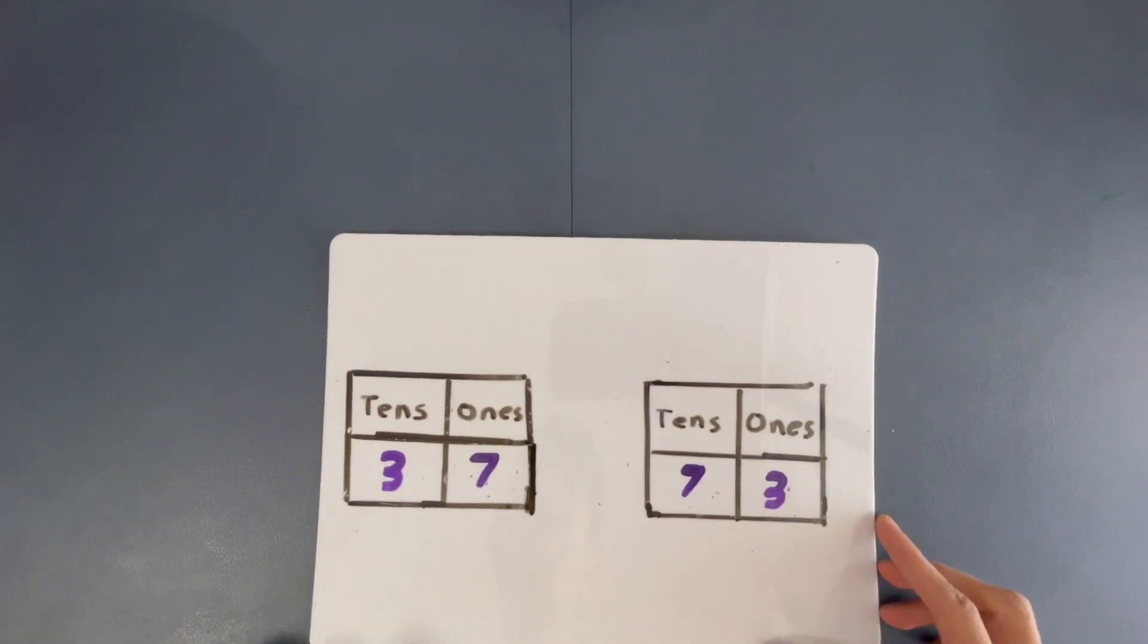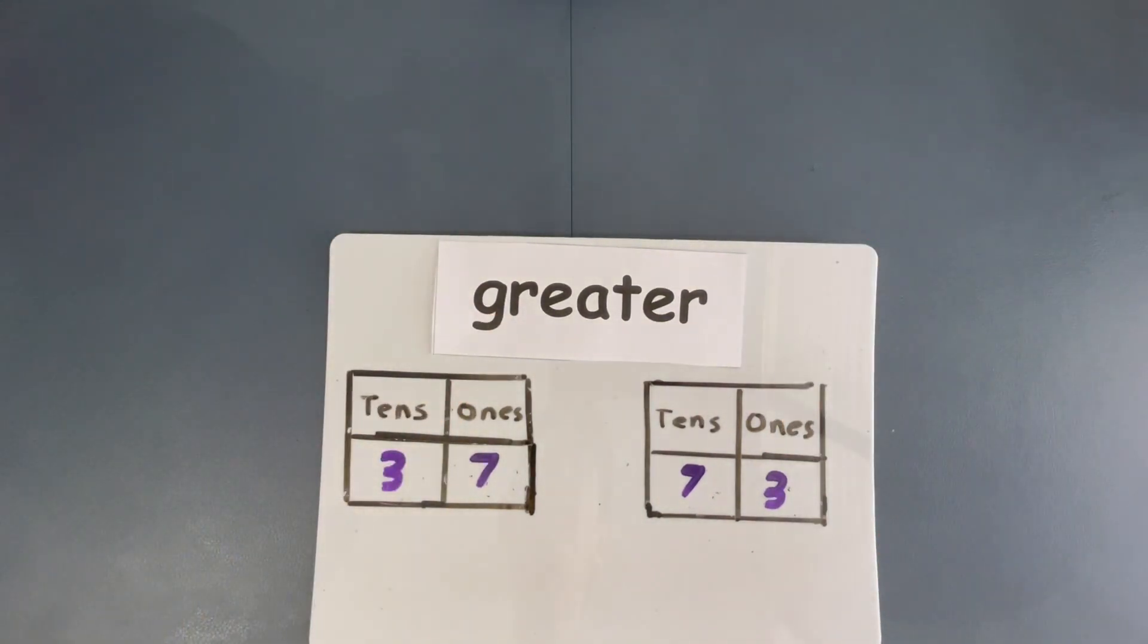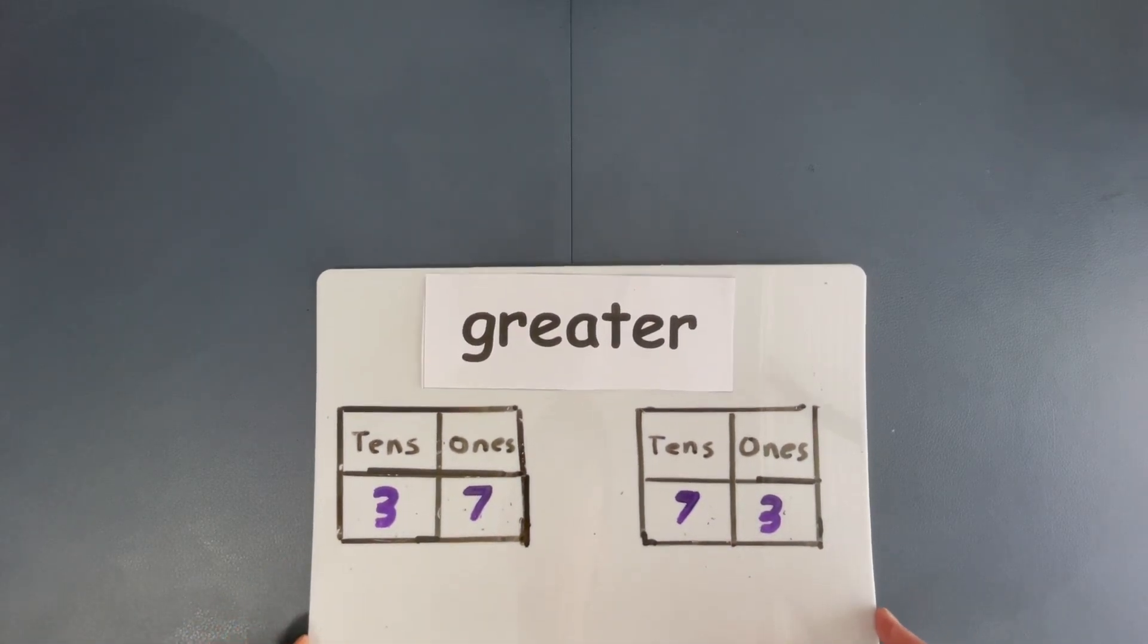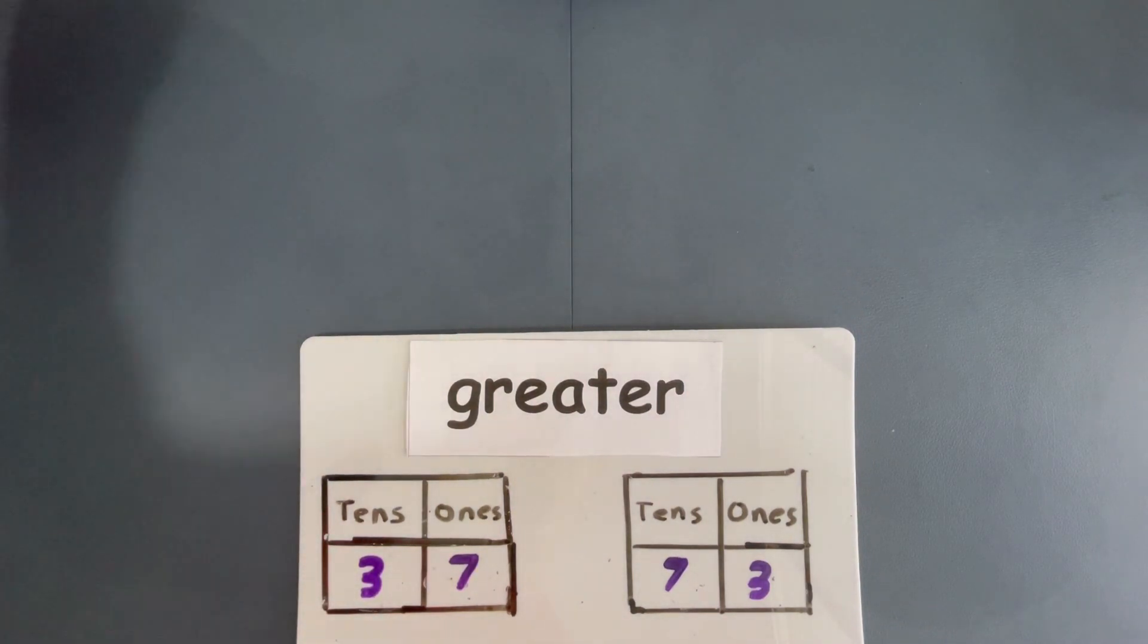And now, I have two more numbers for you. 37 and 73. And I'm going to ask you again, which number is greater? Now, they look the same, don't they? 3 7, 7 3. So, which one is greater? Let's look at the tens. Okay? The difference is in the tens.